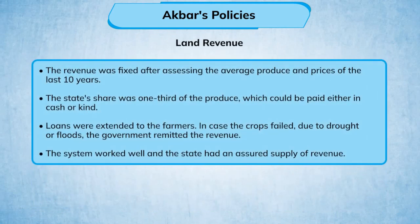The revenue was fixed after assessing the average produce and prices of the last 10 years. The state's share was one-third of the produce, which could be paid either in cash or kind. Loans were extended to farmers in case crops failed due to drought or floods, and the government remitted the revenue. The system worked well and the state had an assured supply of revenue.